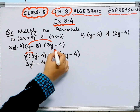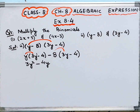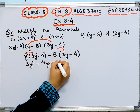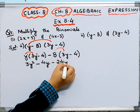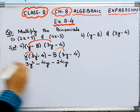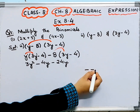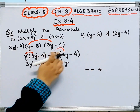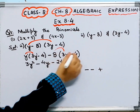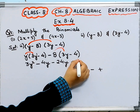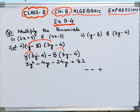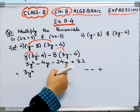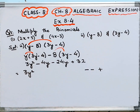Now minus 8 multiplied by the whole expression: plus times minus is minus, so 8 times 3 is 24, giving minus 24y. Then minus times minus is plus, so 4 times 8 is 32, giving plus 32. Now, these are both like terms — both have variable y.